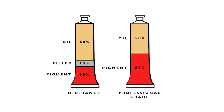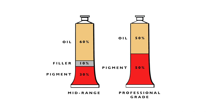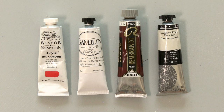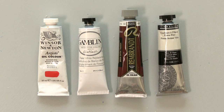Mid-range paints will be a little less expensive. That's because even though mid-range paints still use real pigment, they contain a greater amount of oil and other fillers than professional quality brands. Mid-range brands include things like Winsor & Newton, Gamblin, Sennelier or Rembrandt. They are all perfectly reliable and professional artists use mid-range brands all the time.